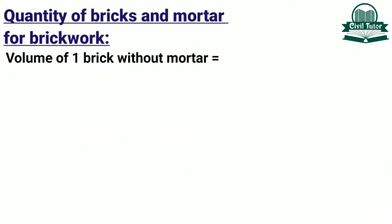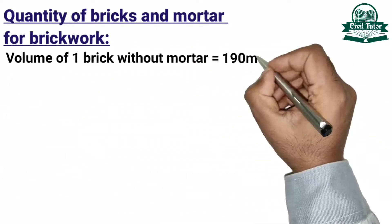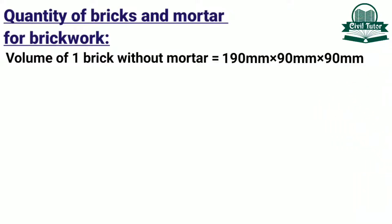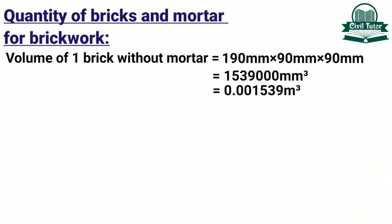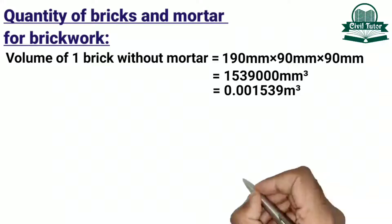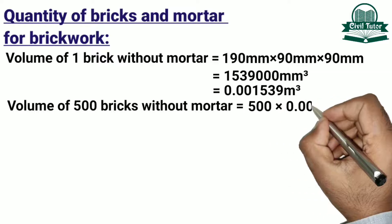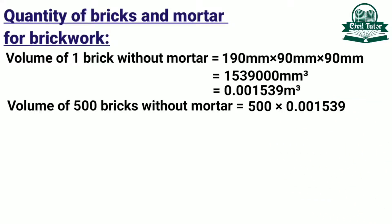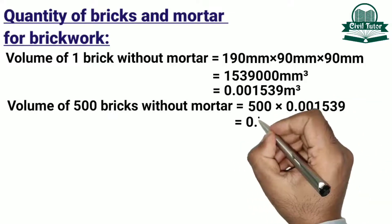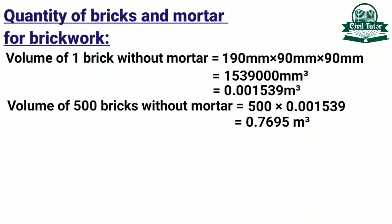Now the volume of 1 brick without mortar will be equal to 190 mm × 90 mm × 90 mm, which will be equal to 1,539,000 mm³. After converting this to m³, we get the volume of 1 brick without mortar equal to 0.001539 m³. Hence the volume of 500 bricks without mortar will be equal to 500 × 0.001539 = 0.7695 m³.